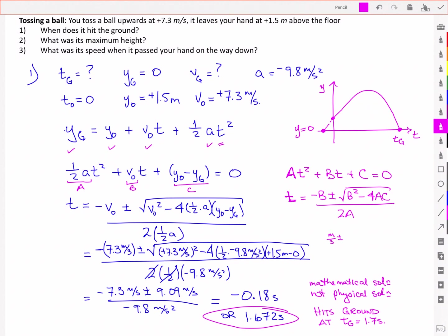Let's check our units. We have meters per second plus or minus the square root of meters squared over seconds squared minus meters per second squared times meters — taking the square root of that whole thing — all over meters per second squared. The top works out to meters per second and the bottom works out to meters per second squared, leaving us with seconds.